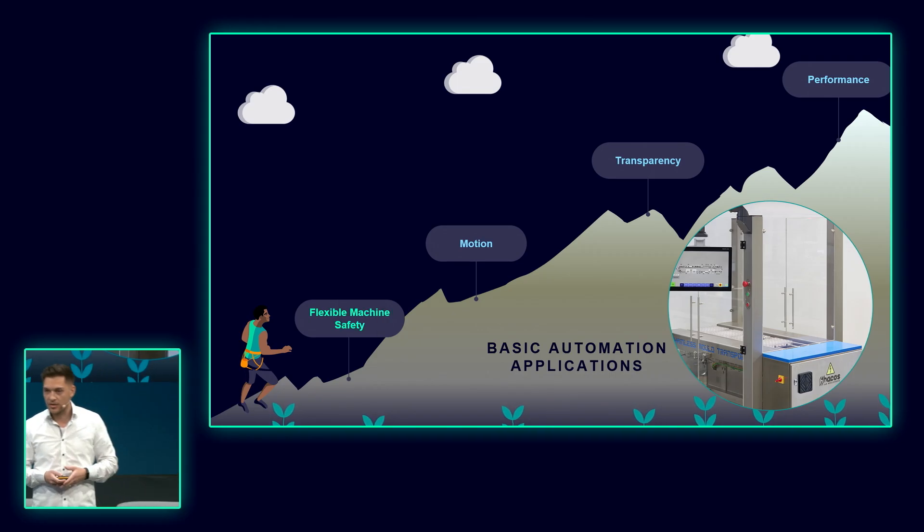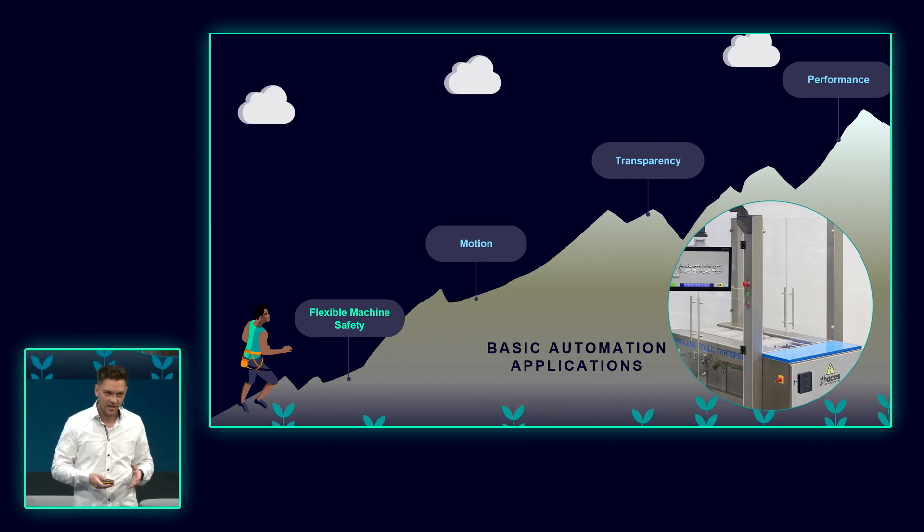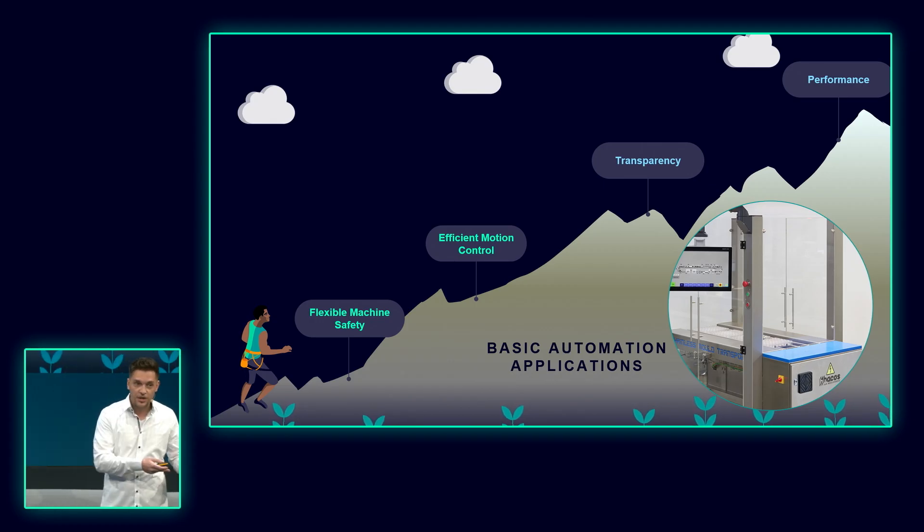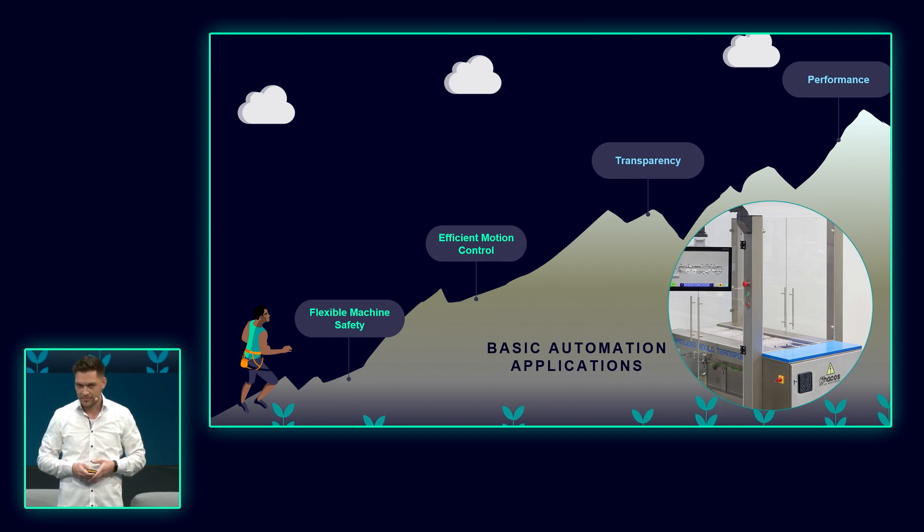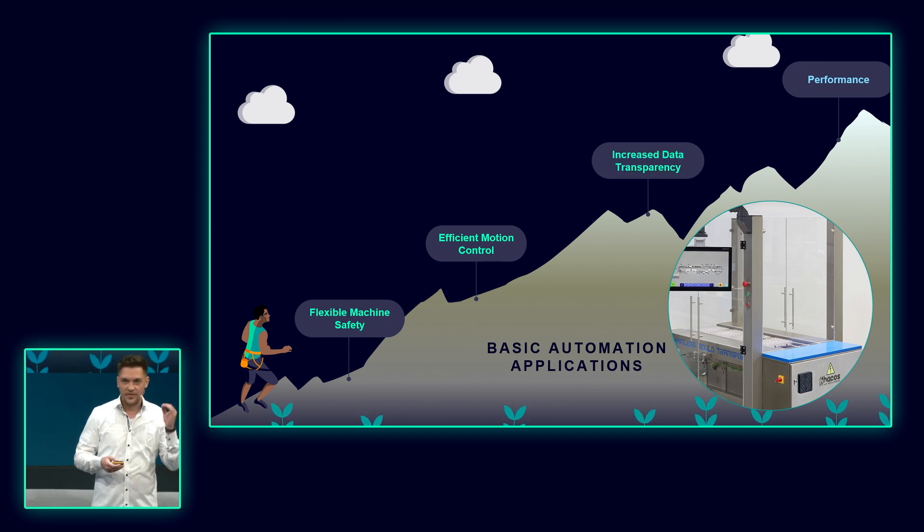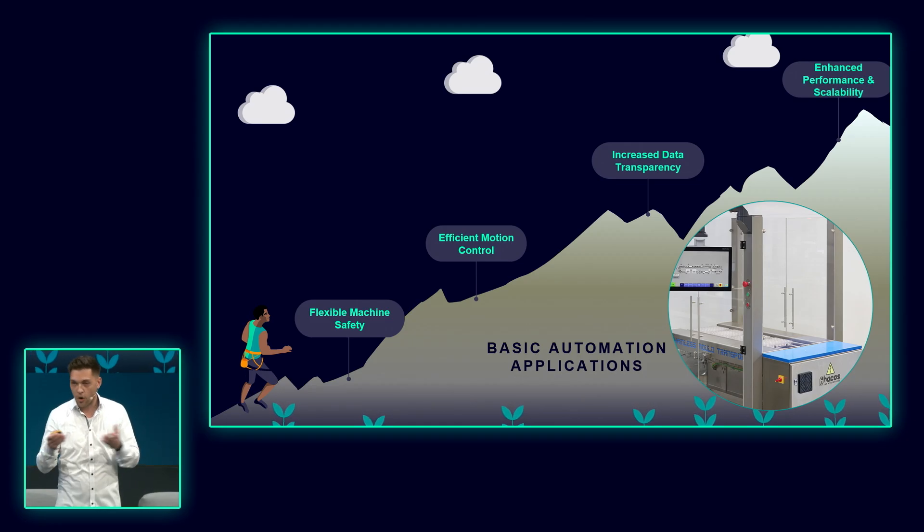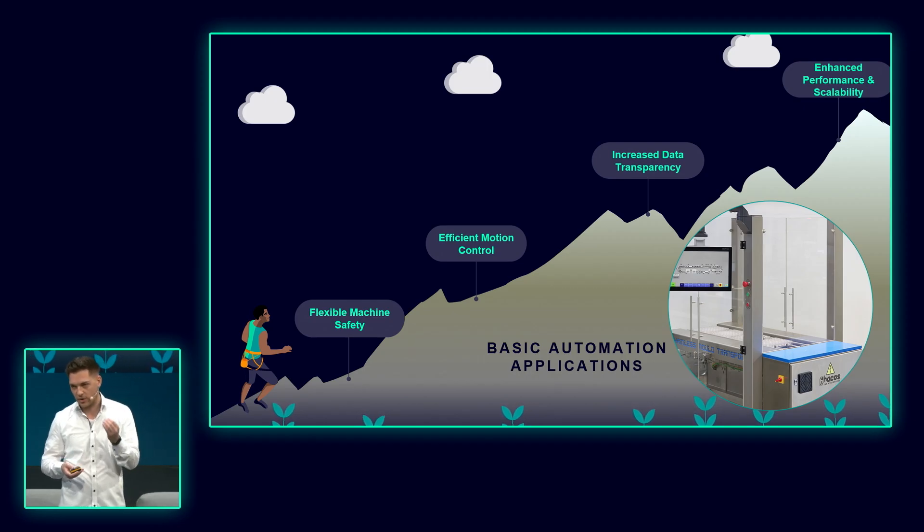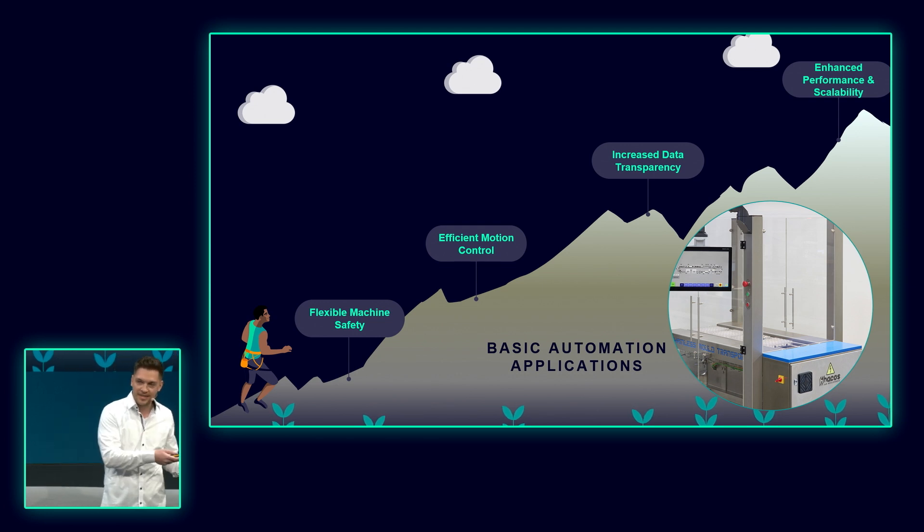Motion is not only important when going on a hike, but also for a lot of machine applications. What you need is efficient motion control implementation to simplify engineering and boost productivity at the same time. You want all of this with the right level of data transparency. Think of machine service - you might want to have access to diagnostics data to optimize your machine uptime. And finally, performance. Performance and scalability are key indicators when looking at productivity and flexibility. Performance defines the level of power of your machine, and in case you reach the application limits, you want to scale up your application with as little effort as possible.